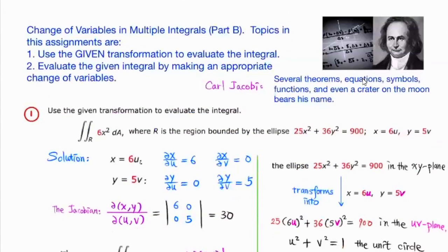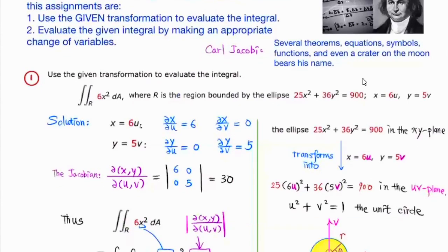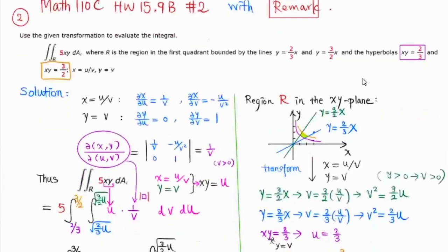So for 15.9, I actually looked up Jacobian and found that he has a crater on the moon named after him. For the first part, we are given the transformation between UV and XY, so that makes things simpler. Then the second one over here, they also give you the transformation.